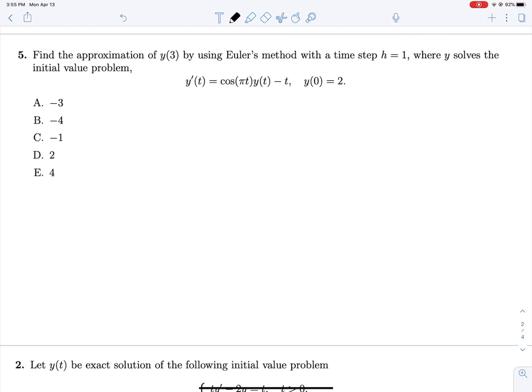Five, let's find the approximation of y at 3 by using Euler's method with a time step of h equals 1. We know that y of 0 is equal to 2,